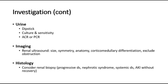For imaging, we can do a renal ultrasound to assess the size, symmetry, and anatomy of both kidneys, the corticomedullary differentiation, and also to exclude any obstruction causing the kidney disease. For histology, in some cases we can consider renal biopsy — for example, if the disease is rapidly progressive, or if suspecting nephrotic syndrome, systemic disease, or acute kidney injury without recovery despite all management done.